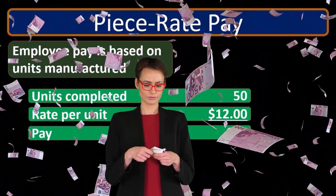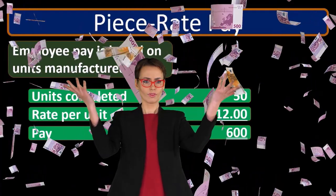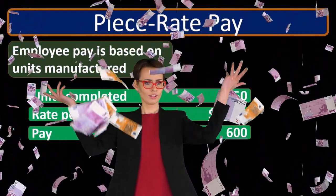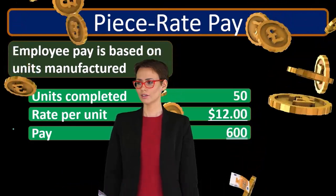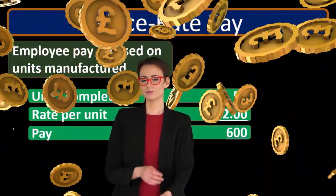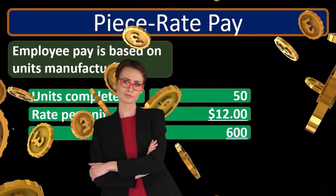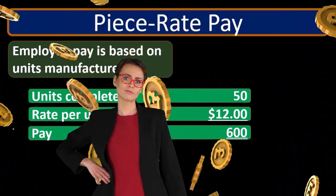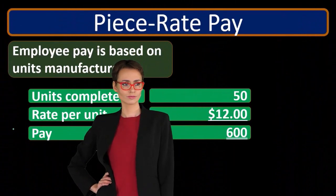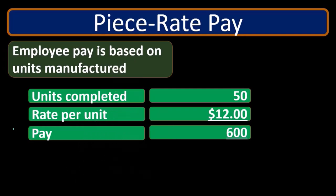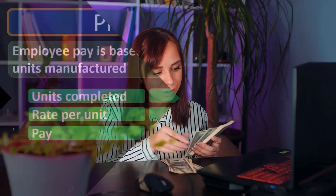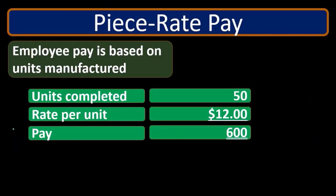Another problem is that since we're not paying on an hourly rate, it's difficult to apply rules and regulations like minimum wage. We have to be careful to still track the effective hourly rate to make sure the payment is in compliance with minimum wage requirements, which are not based on units produced. The minimum wage is typically based on traditional hourly pay.